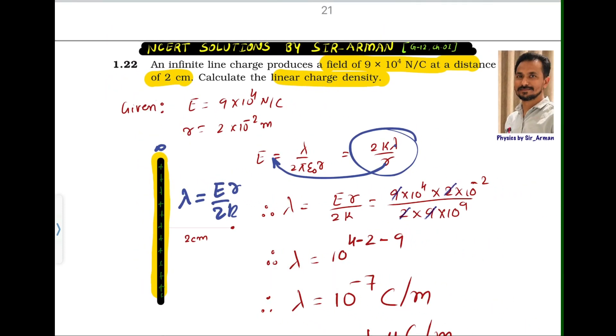Now, electric field is given 9×10^4, and r is given. r is the distance where this charge is placed. So it is 2×10^-2 meters. Here it is 2. It is there and the value of k.